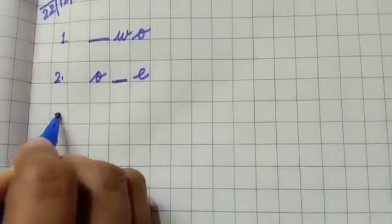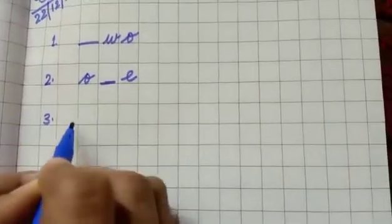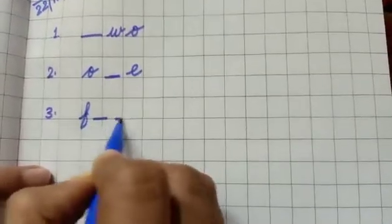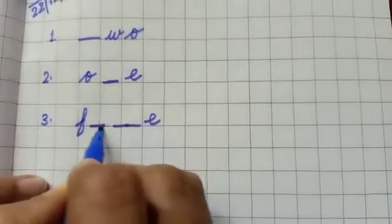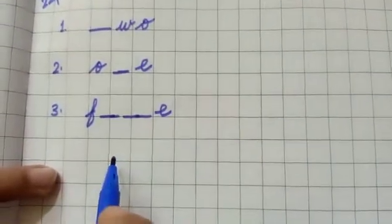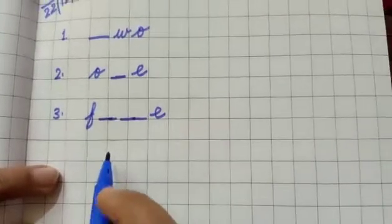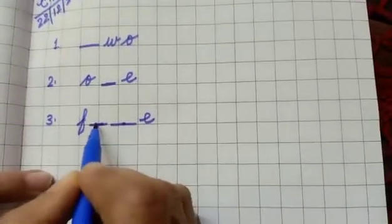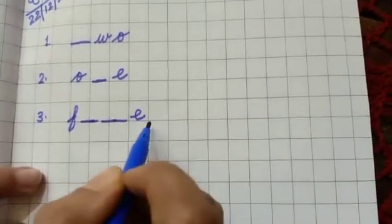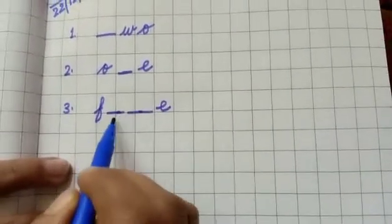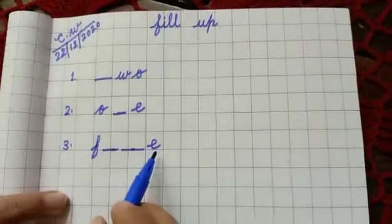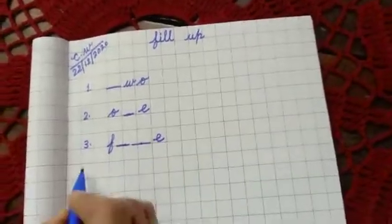Now number three. F dash E. What you will write? F I V E, 5. Okay, next one.